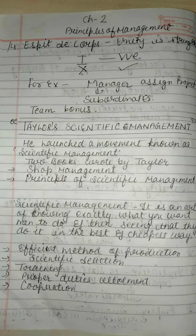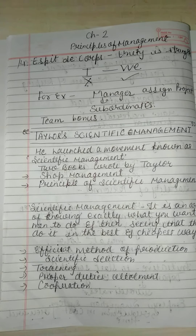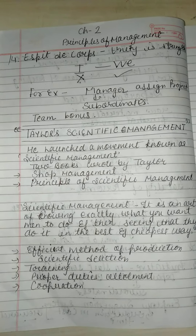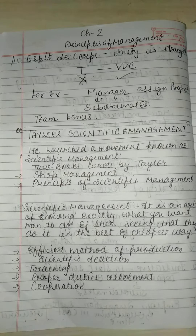Today we are going to start another topic — Taylor's Scientific Management. Henry Fayol and Taylor were both management thinkers. Fayol gave 14 principles which we already discussed — how in an organization, with the help of division of work and division of labor, we can follow scalar chain, and the importance of order. Now we are going to start the principles given by Taylor.